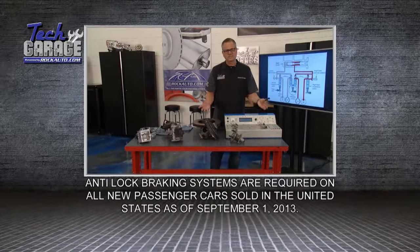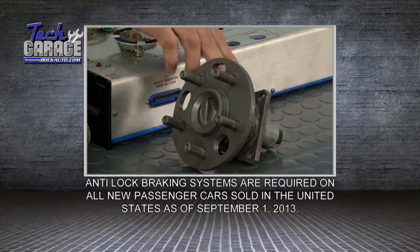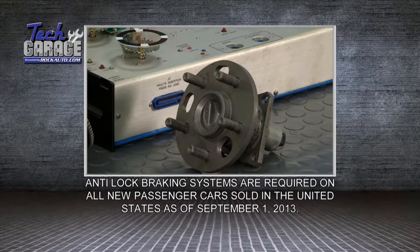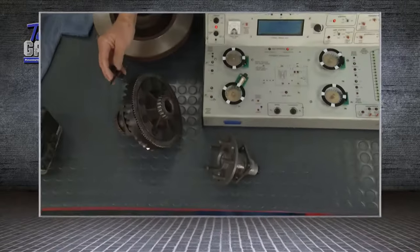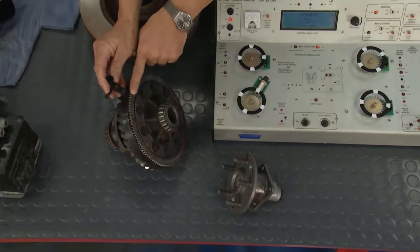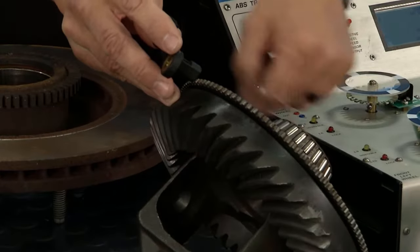Wheel speed sensors come in all shapes and forms. You've got one right here that's a built-in bearing sensor. It's all built into it. You have to replace the whole thing. This one right here is an actual differential. You can see it creates a magnetic field and picks it up as the whole differential spins around.